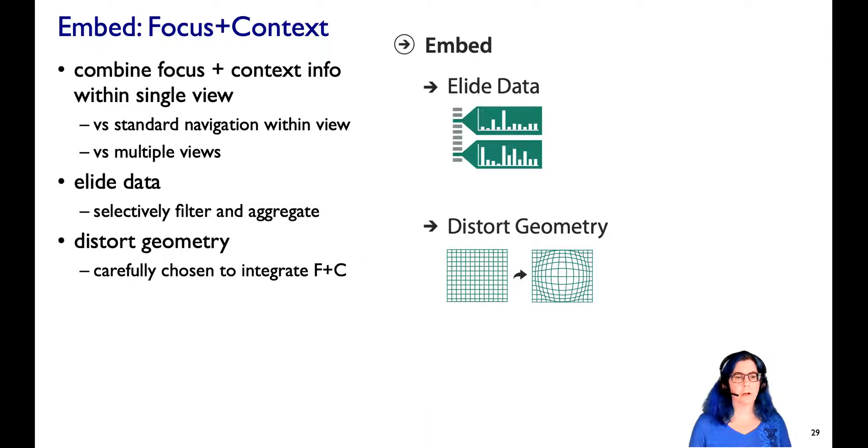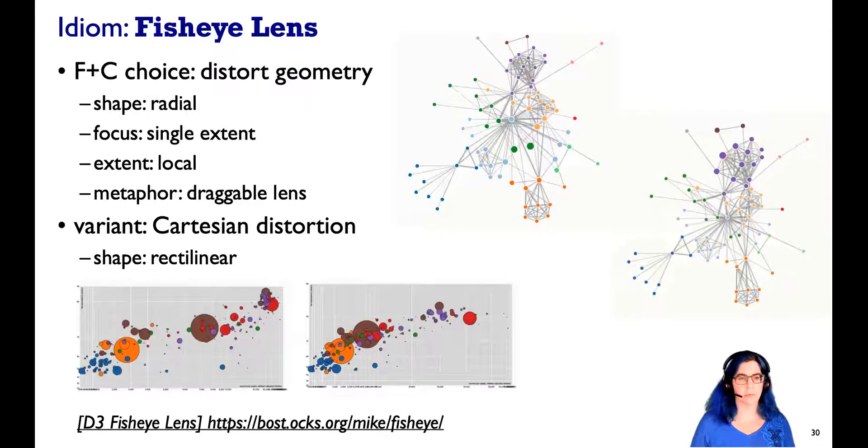What's another approach? It's also possible to distort the geometry to have a carefully chosen distortion in an attempt to fit more contextual information around some focus selection. Let's look at some examples. Fisheye lenses are a particular way to distort geometry. With a radial lens, we're able to drag it around and see how the view changes. There's a variant of this also called Cartesian distortion, where we can do that with something more rectilinear.